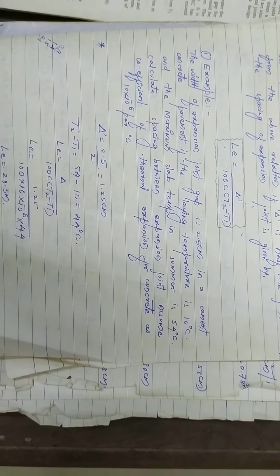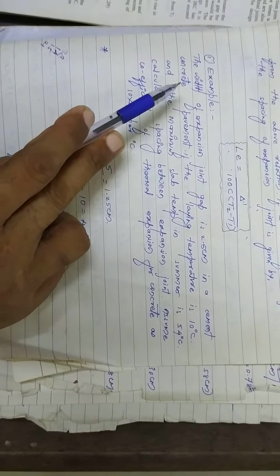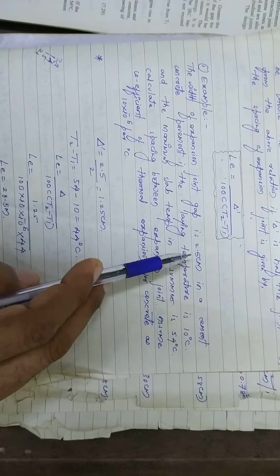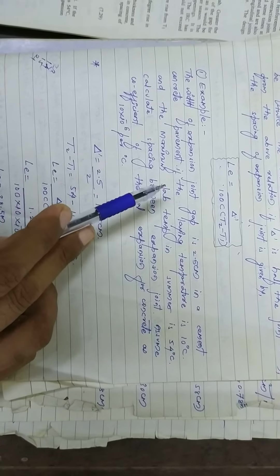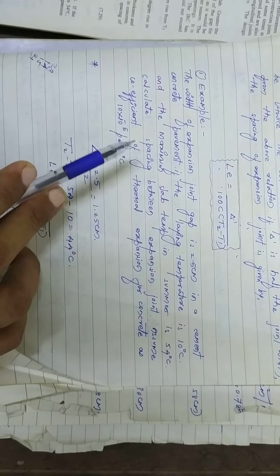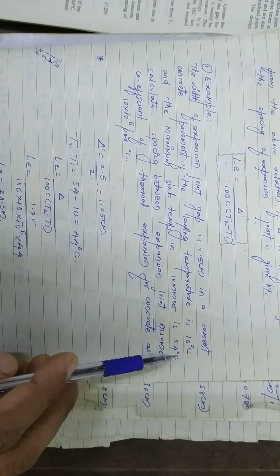Now we'll discuss one problem on spacing of expansion joint. The width of expansion joint gap is 2.5 cm in a cement concrete pavement. If the laying temperature is 10 degree centigrade and the maximum slab temperature in summer is 54 degree centigrade, calculate the spacing between expansion joint.